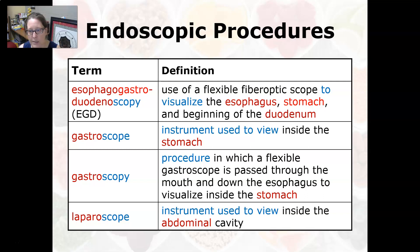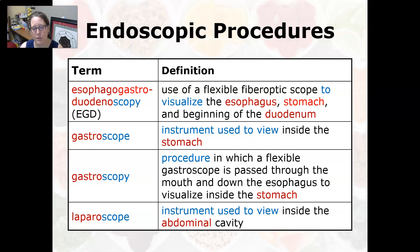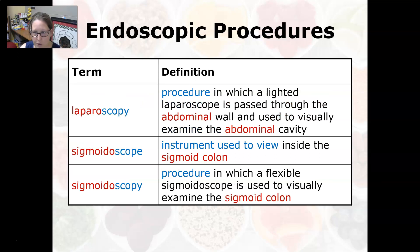A gastroscope is an instrument used to view inside the stomach, and gastroscopy is a procedure in which a flexible gastroscope is passed through the mouth down the esophagus to visualize inside the stomach — permitting viewing of ulcers and peptic ulcer disease. A laparoscope is an instrument used to view inside the abdominal cavity. Laparoscopic surgery involves small incisions into the abdomen; for example, gallbladder removal can be done laparoscopically. Laparoscopy is a procedure in which a lighted laparoscope is passed through the abdominal wall to visually examine the abdominal cavity and can also facilitate surgery.